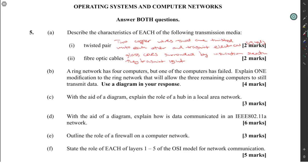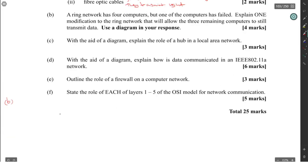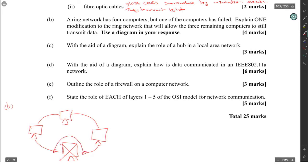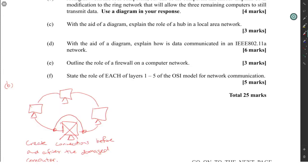A ring network workhouse for computers, but one of the computers has failed. Explain one modification to the ring network that will allow the three remaining computers to still transmit data. What you're going to have to do is create a link that jump-wires from before the damaged computer to after it, basically creating connections that bypass the damaged computer.